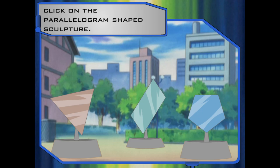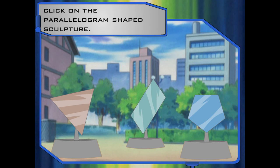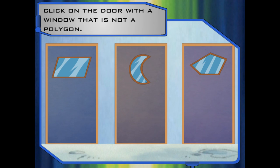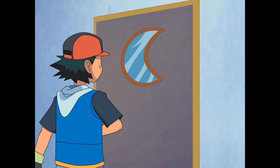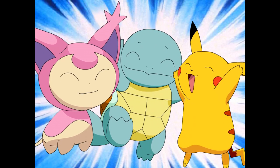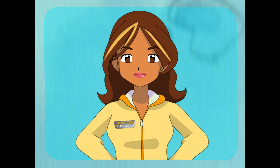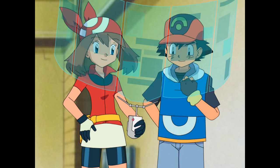We need to walk to the left of the parallelogram-shaped sculpture. Awesome! Choose the door with a window that is not a polygon. Awesome! Here we go! Hooray! We made it! See? Those polygon directions weren't so hard, now that you know so much about polygons. It was pretty easy!